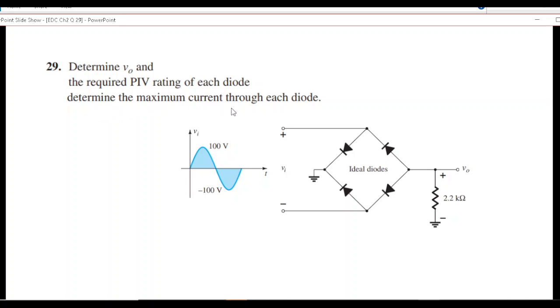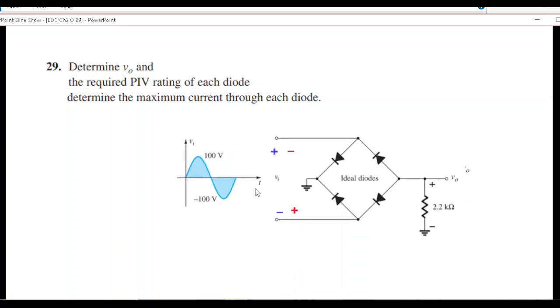Now in the question it has been marked positive and negative here. I think this is slightly misleading because we have both positive and negative half cycles. It is better that you keep in mind that when the positive half comes it will be positive at the top, negative at the bottom, and when the negative half comes it will be negative at the top and positive at the bottom.